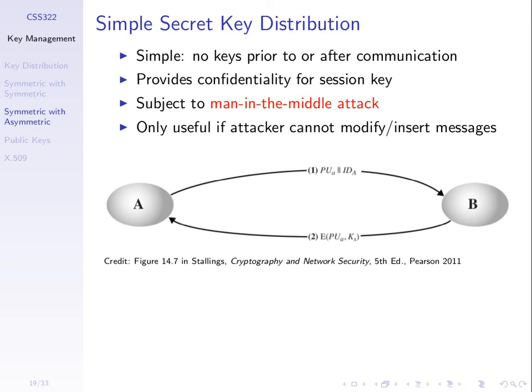In some cases and some networks we can assume an attacker will not be able to modify messages. For example, if we own a submarine cable going between two countries under the ocean, we may assume someone can't insert a device at the bottom of the ocean to modify messages. So in some cases the attacker can't modify — but if they can, the man-in-the-middle attack is possible.